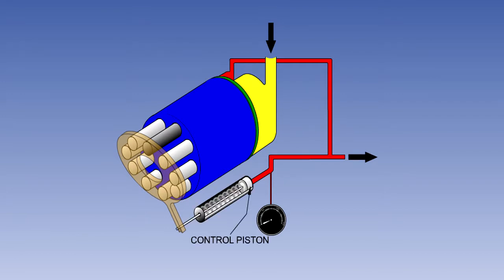The angle of the swash plate, and thus the piston stroke, is varied by the position of the control piston. The control piston has pump outlet pressure on one side of it and a spring on the other.